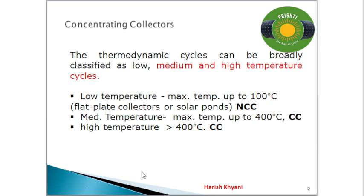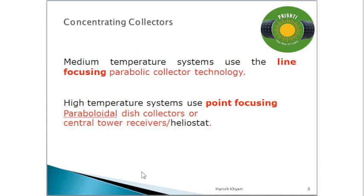Low temperature is the non-concentrating category, which includes flat plate collector and solar pond. For medium temperature, the maximum temperature goes up to 400 degree centigrade — this is the concentrating collector range. For high temperature cycles, more than 400 degree centigrade is achieved — this is for power generation. For medium temperature concentrating collectors, the focusing is line focusing, while for high temperature it is point focusing. Non-concentrating collectors use no focusing device.